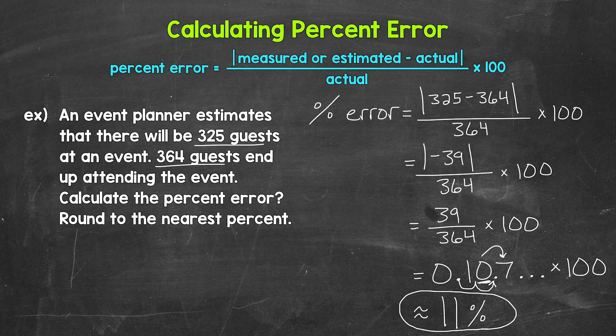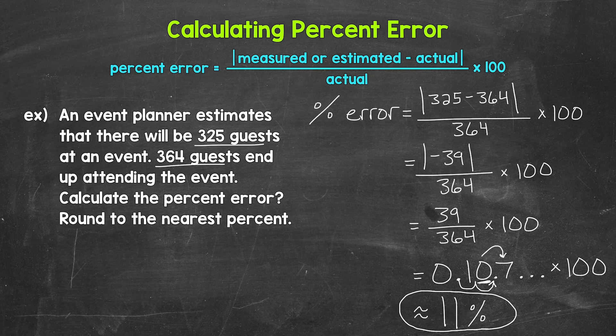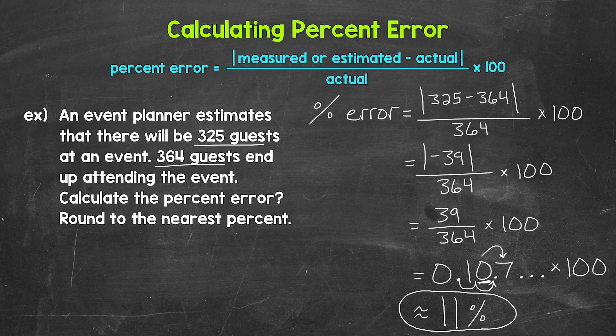So that means that the event planner's estimate of 325 guests was off by approximately 11% from the actual amount of guests, 364.